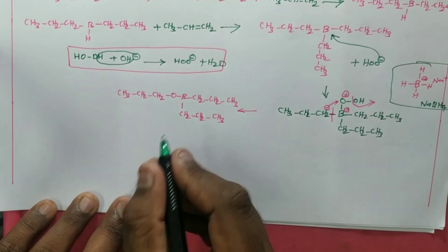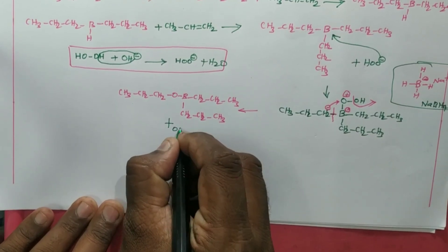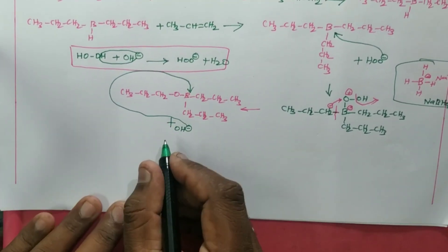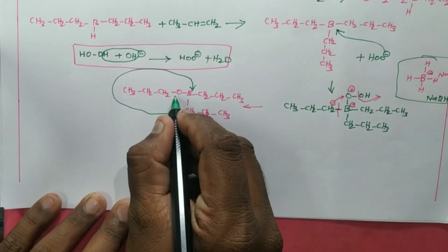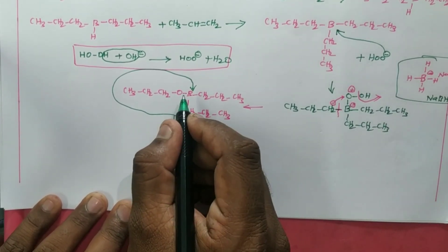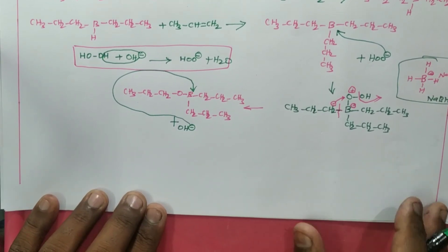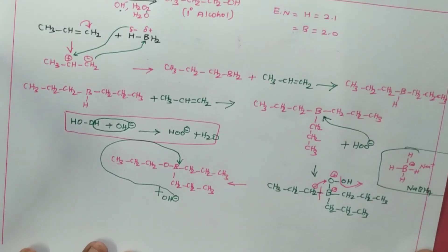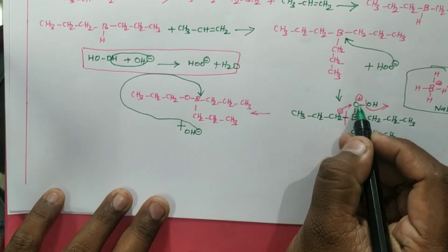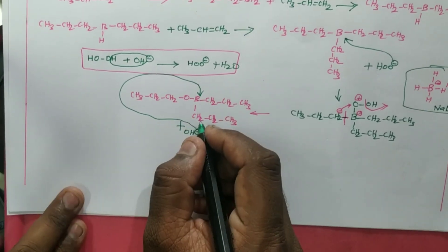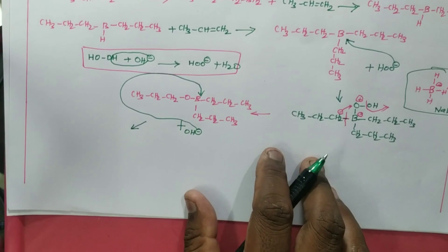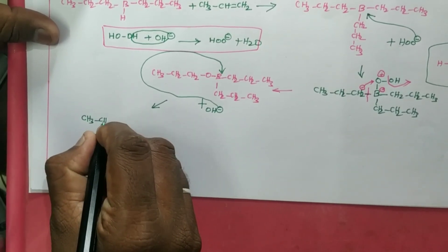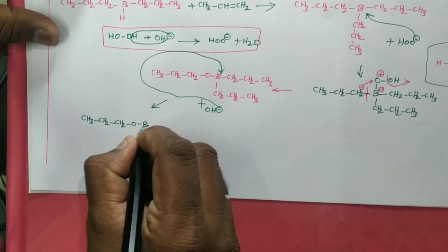Now the base comes and attacks. OH⁻ attacks this carbon-boron bond. As we know, boron is highly electron-deficient compared to carbon, so this shift is taking place. With OH⁻ attack, I get a product: CH3-CH2-CH2-O-B with the other alkyl groups attached. Because boron is now four-bonded, another negative charge forms — same as the NaBH4 analogy.